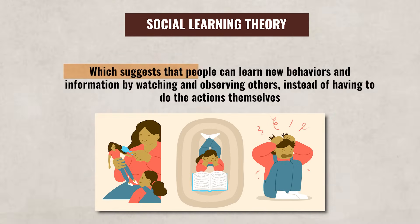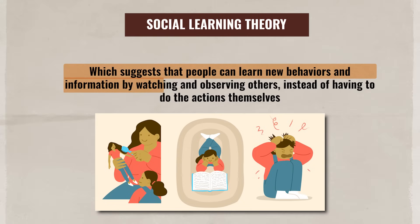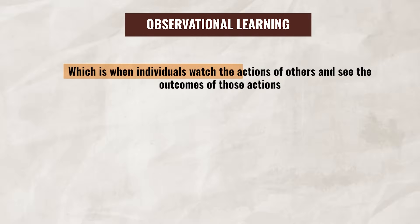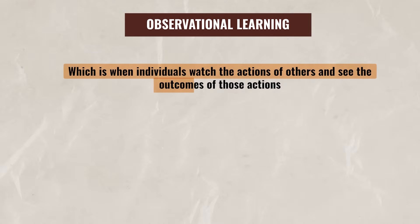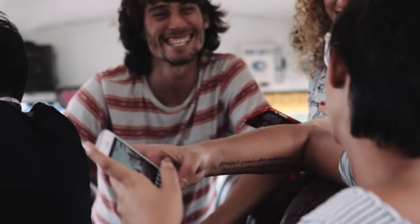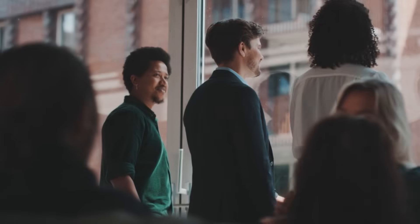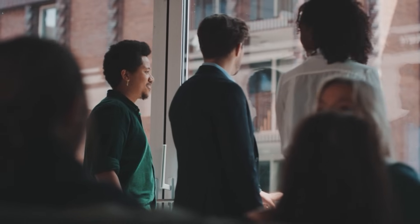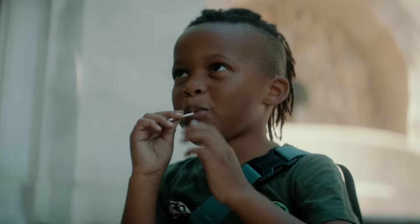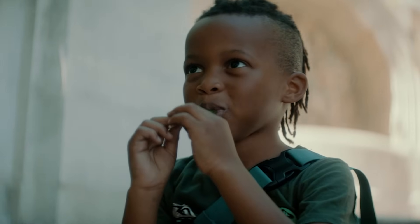Let's review the Social Learning Theory, which suggests that people can learn new behaviors and information by watching and observing others, instead of having to do the actions themselves. This idea emphasizes the role of observational learning, which is when individuals watch the actions of others to see the outcomes of those actions. For instance, you might watch your sibling get praise for getting an A in a class or washing the dishes, which would lead you to the belief that if you do those actions, you will get praise as well.